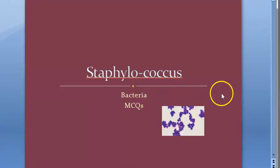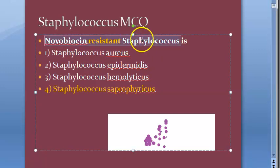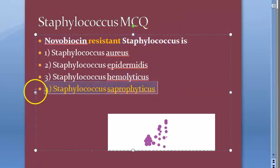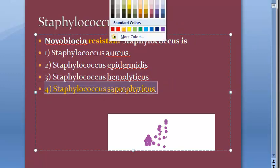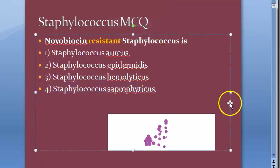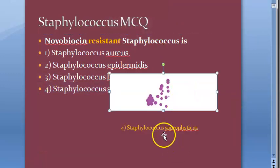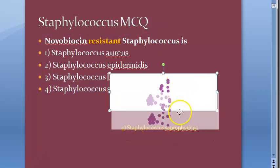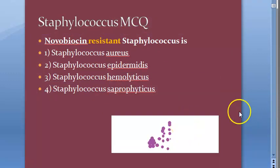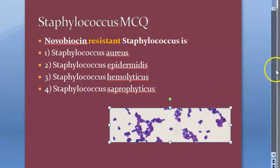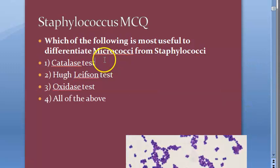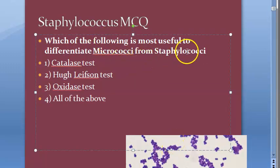If you have watched our previous videos, these MCQs will be very easy. First question: novobiocin-resistant staphylococcus is staphylococcus saprophyticus — it is novobiocin resistant. Look at the answer here: staphylococcus saprophyticus is the answer.